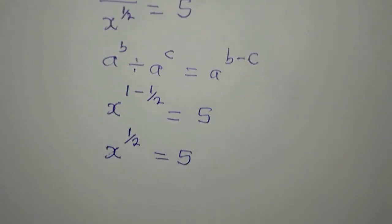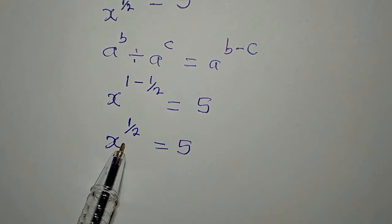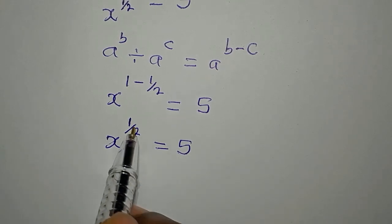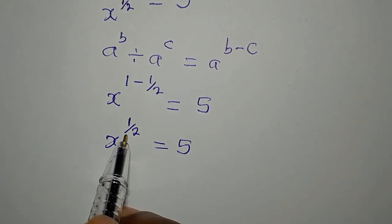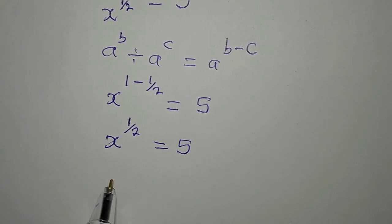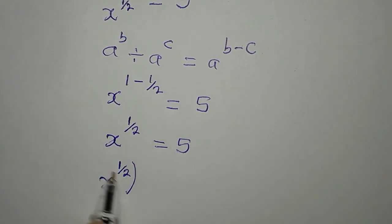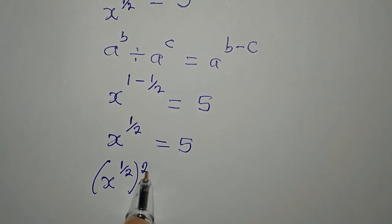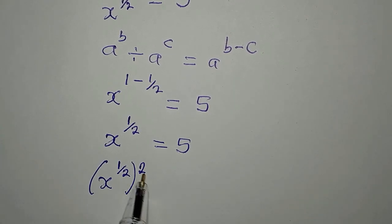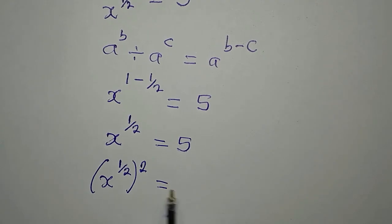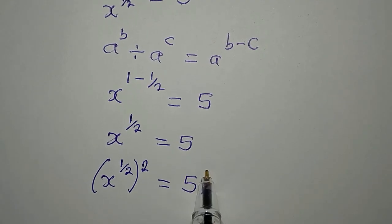And do not forget that we are looking for the value of x. So I have to do away with the power of 1 over 2. So I have x to the power of 1 over 2, then squared. Because square and square root will cancel each other. So this is equal to 5. Then you square.